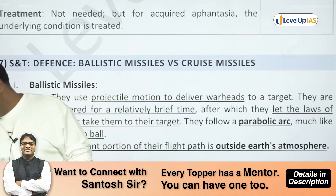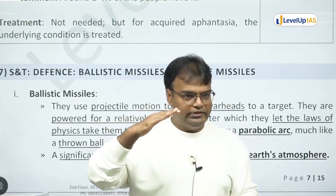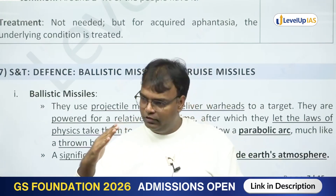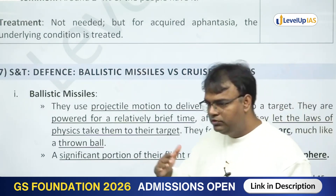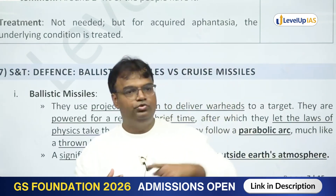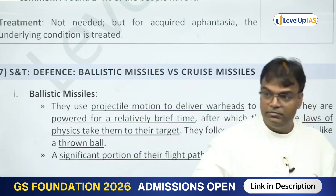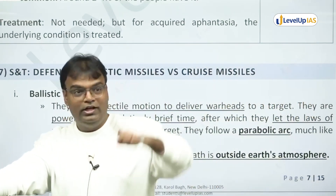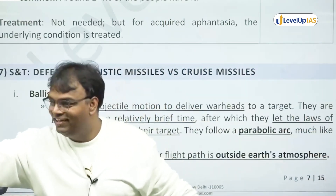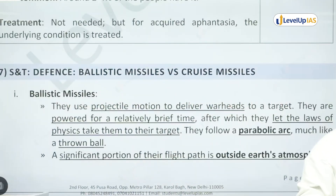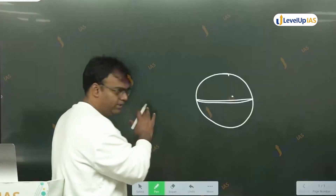We'll keep using the terms cruise missiles and ballistic missiles. A missile is a rocket-kind of device which you launch from one place and it takes a bomb to another place. Missiles can be surface-to-surface, surface-to-air, air-to-air, air-to-surface, and even underwater — submarines and submarine destroyers. All of these are missiles. We broadly divide missiles into two categories.